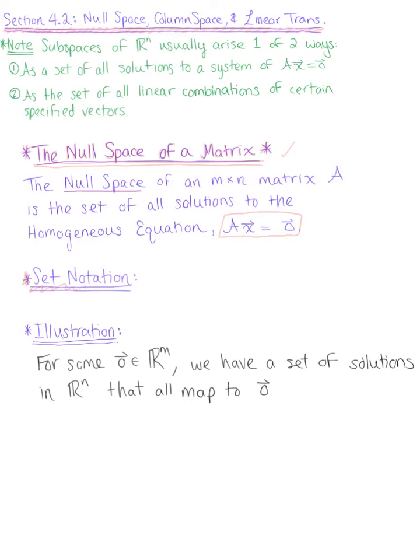So let's begin by thinking about what this looks like in set notation form. We say that the null of this m by n matrix A is defined by the set of all vectors x such that vector x is in ℝⁿ and matrix A times vector x equals the zero vector.